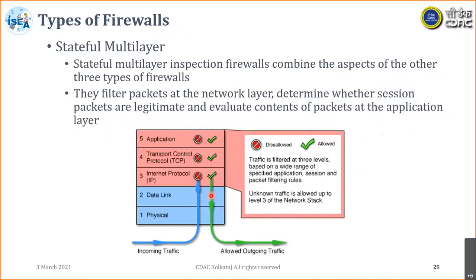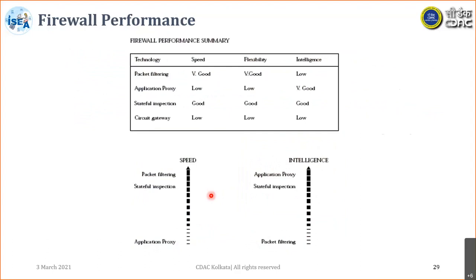There is also the stateful multi-layer inspection firewall, which combines aspects of the other three types — filtering packets at the network layer, determining whether session packets are legitimate, and evaluating packet contents at the application layer. Traffic is filtered at three levels. Comparing performance: packet filtering has very high speed and flexibility but low intelligence; application-level firewall has low speed and low flexibility but high intelligence; stateful inspection has good speed, good flexibility, and built-in intelligence; circuit-level gateways have very low speed, less flexibility, and less intelligence.